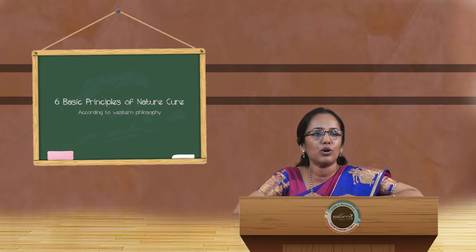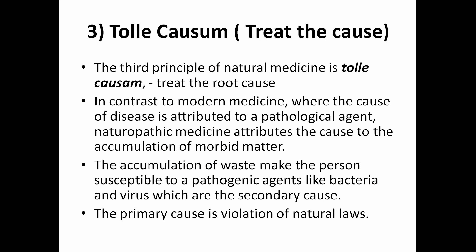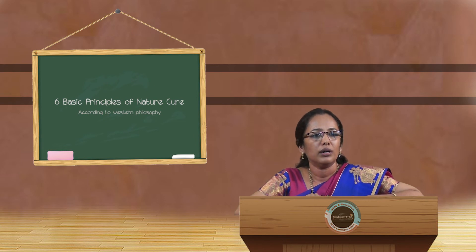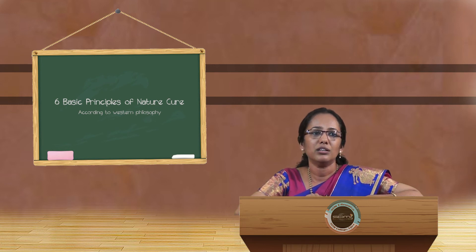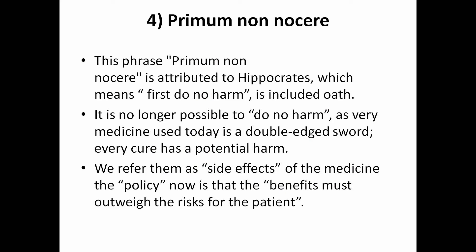The third principle, Tolle Causam, means treating the root cause of the disease. In contrast to modern medicine, where disease is attributed to pathological agents like bacteria and viruses, naturopathic medicine attributes disease to the accumulation of morbid matter — the accumulation of waste makes the person susceptible to bacteria and viruses. According to nature cure, violation of natural laws is the main root cause of disease. Nature cure says there is one cause — toxemia — and one cure — removing the toxemia. True healing happens only when you treat the root cause.